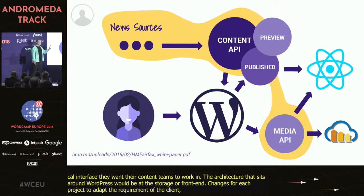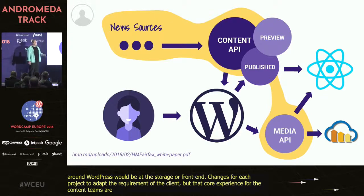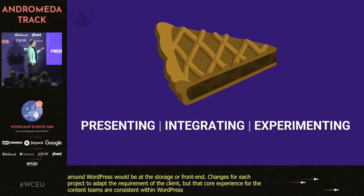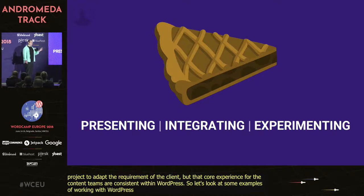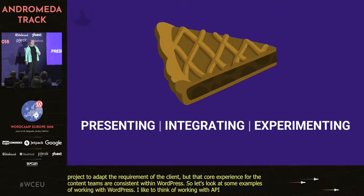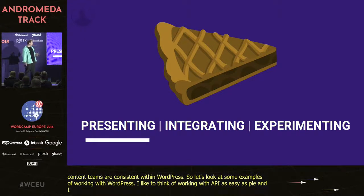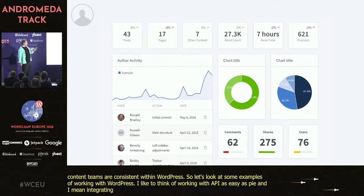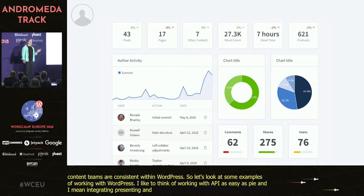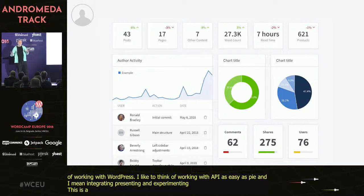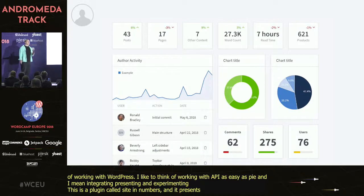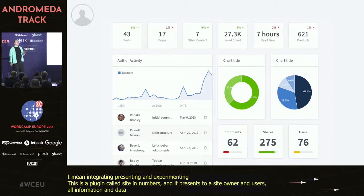I like to think of working with the API as being as easy as PIE — by that I mean Presenting, Integrating, and Experimenting. So let's look at the first example: Presenting. This is a plugin I've been working on called Site in Numbers. What it does is present to a site owner and their users all sorts of information, data, and revealing statistics about their site — the total word count, a breakdown of where content is, publishing times, publishing days, most popular and successful content.